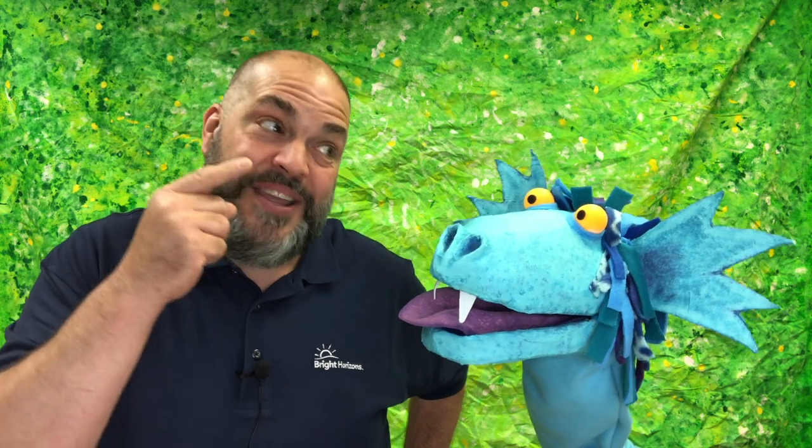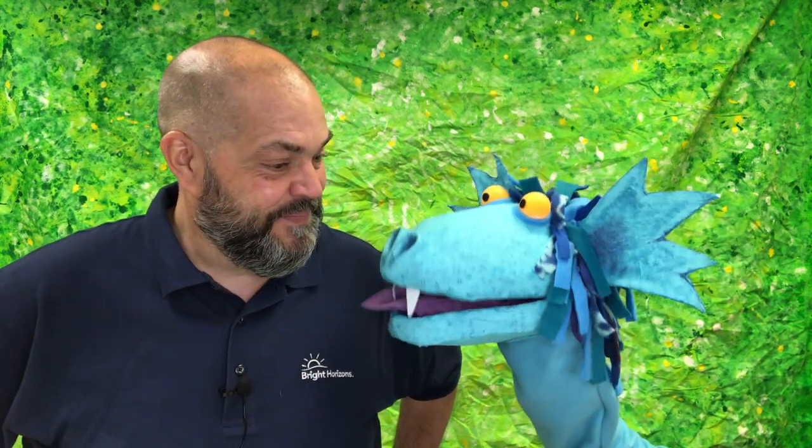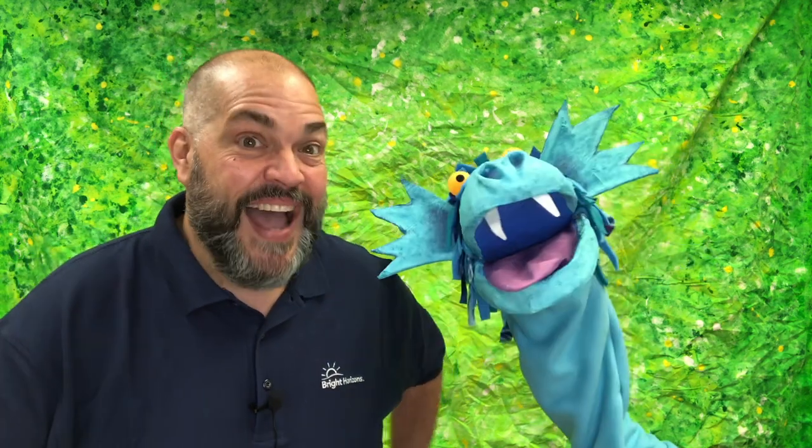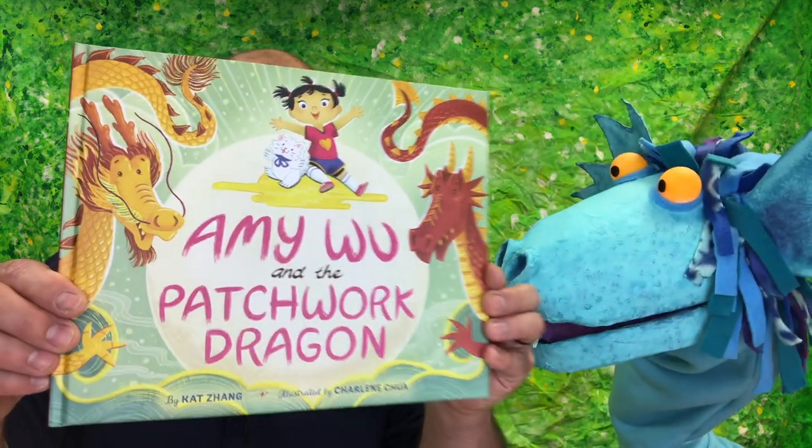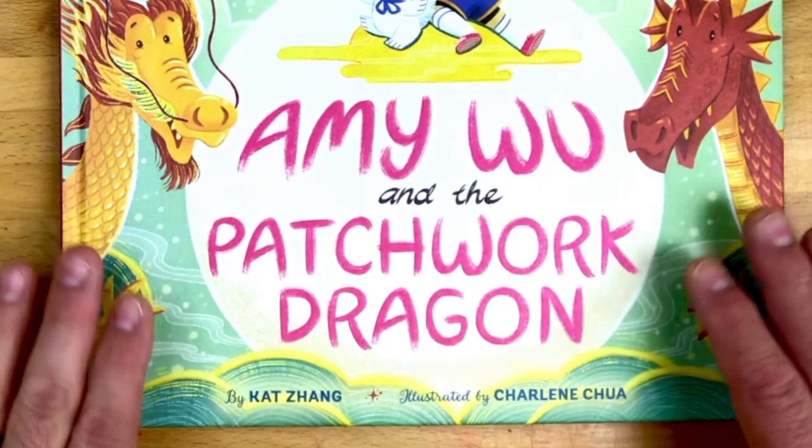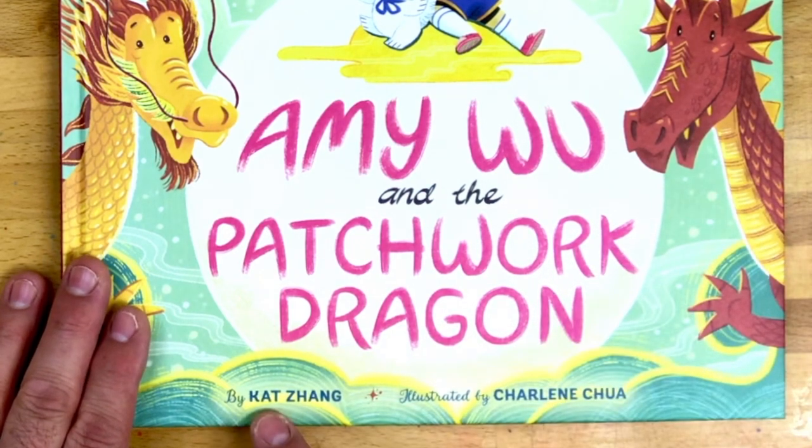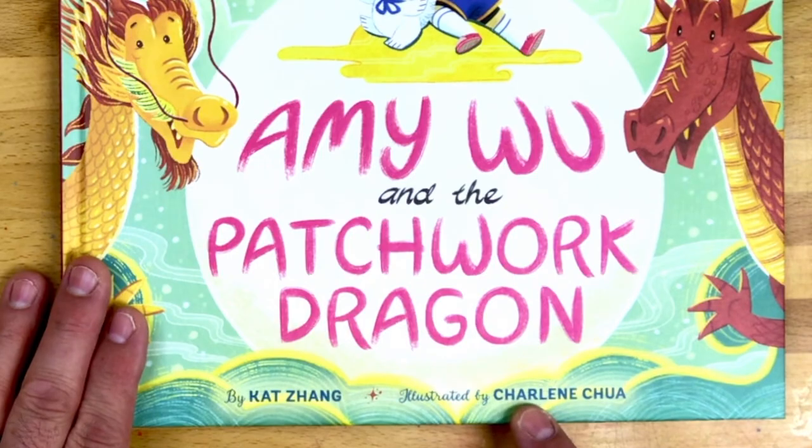And this year, I think you're really going to like this book. Oh, well, Mr. David, you know how much I like it when you read stories to me. I know you do. And this year, I think you're really going to like it. The book is called Amy Wu and the Patchwork Dragon. Did you say dragon? Yes. I love dragons. I'm a dragon. Yes, I know you're a dragon. And that's why I thought you might like this book. Amy Wu and the Patchwork Dragon, written by Kat Zhang and illustrated by Charlene Chua.